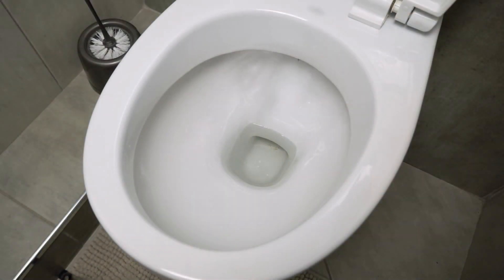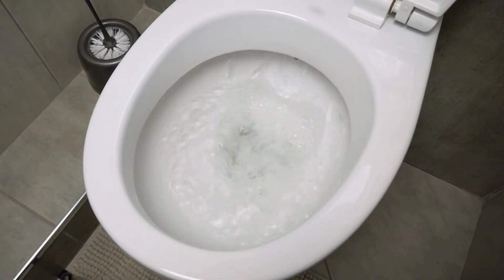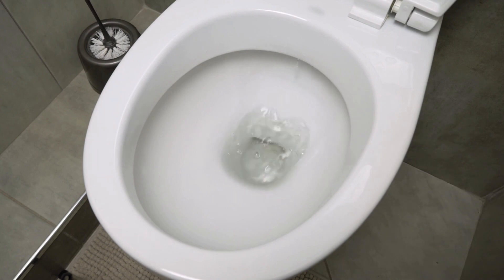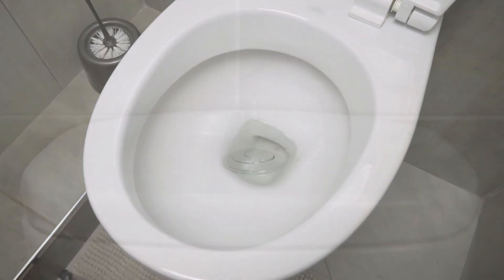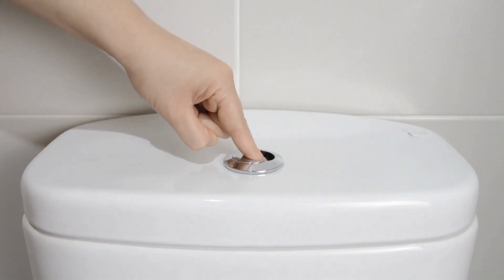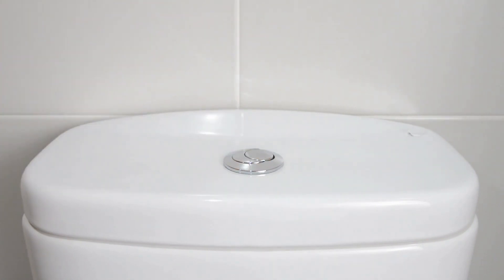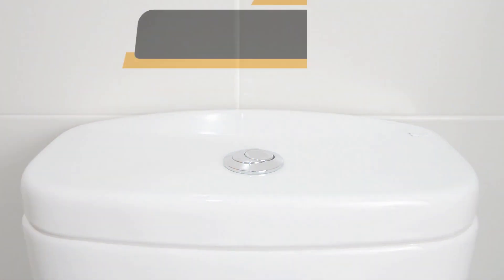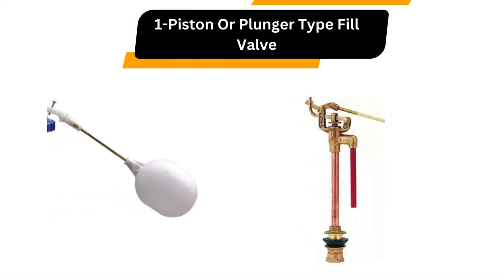The overflow tube is a vertical tube that has a connection with the fill valve through the fill tube. It flows excess water into the bowl in case the float ball fails to stop entering water into the tank after a certain level. Now, let's see some types of toilet overflow tube valves.